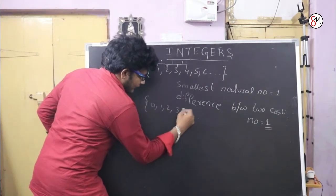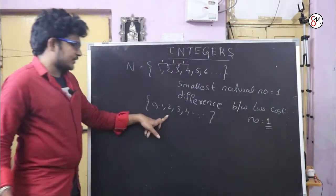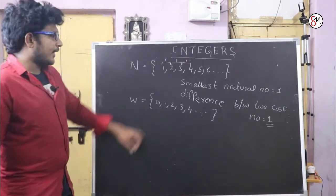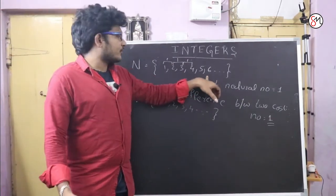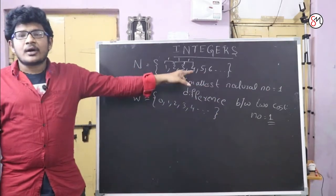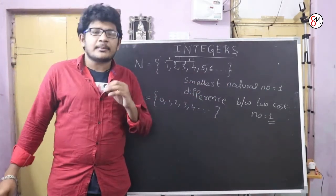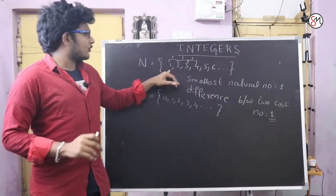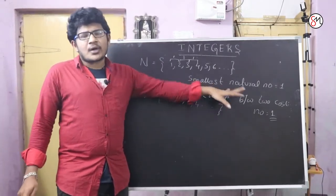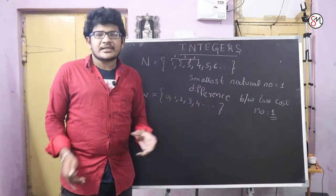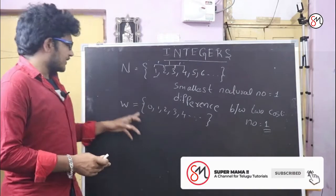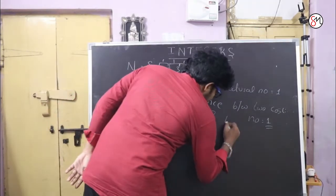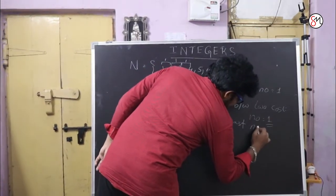Now, whole numbers. If we include 0 in natural numbers, that is called whole numbers, which is denoted by W. So W includes 0, 1, 2, 3, 4, and so on. The least number in whole numbers is 0. There is no highest number in whole numbers.